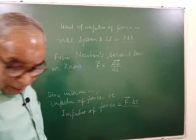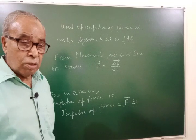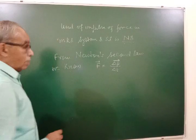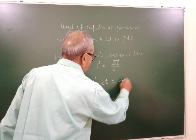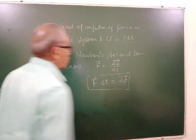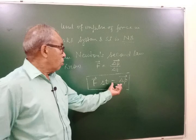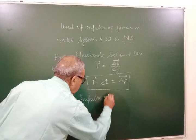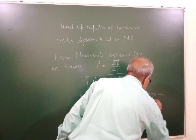F is equal to delta P upon delta T. I have felt while teaching students that they don't want to put the vector sign. Whatever the quantities are vector, please write in vector form. We will write the minus sign later on. But if any equation relates to vector, we should write in vector form. F into delta t is equal to delta P. Force into time interval is impulse of force.